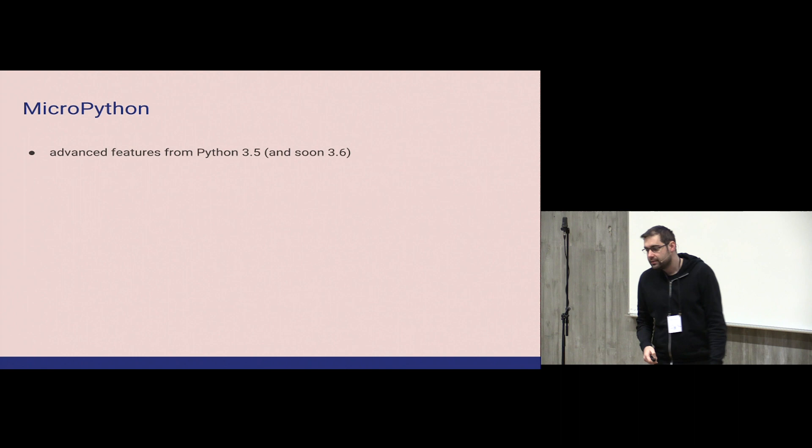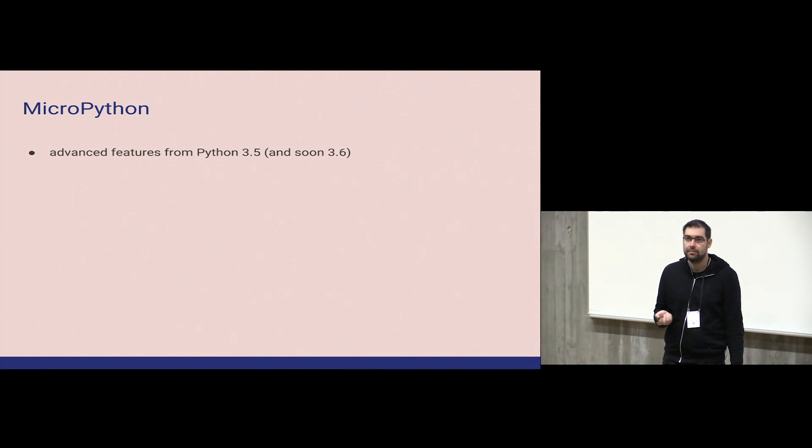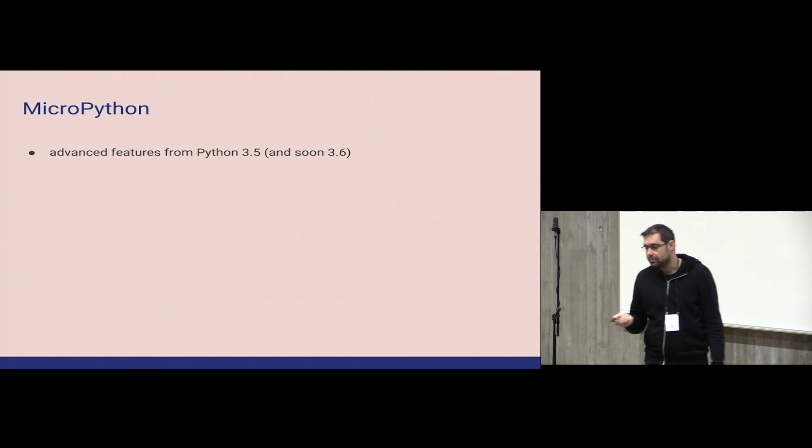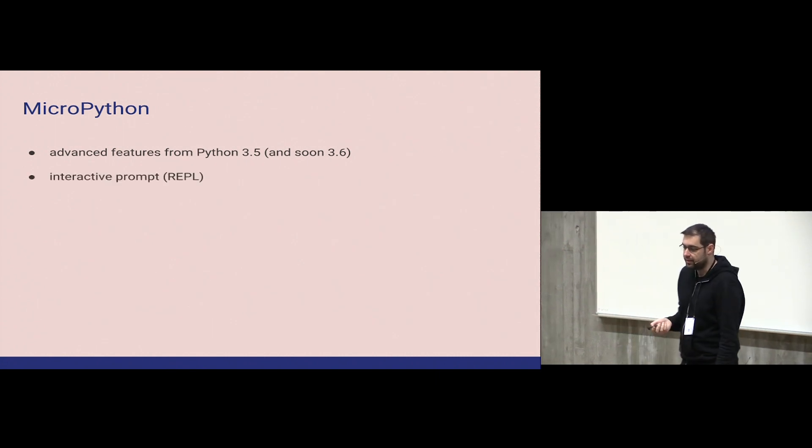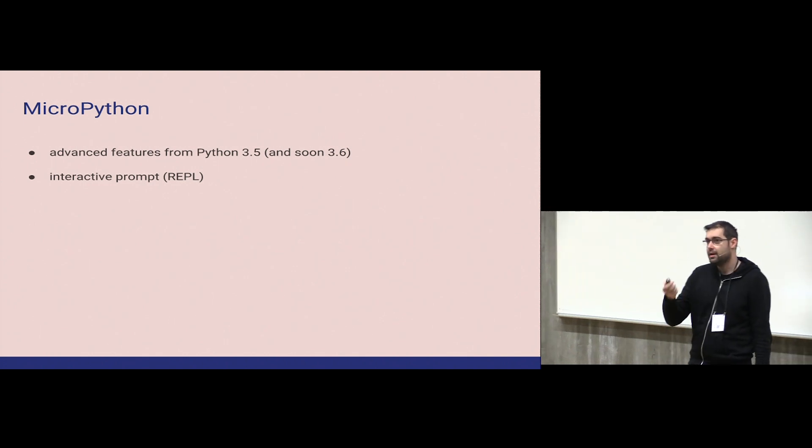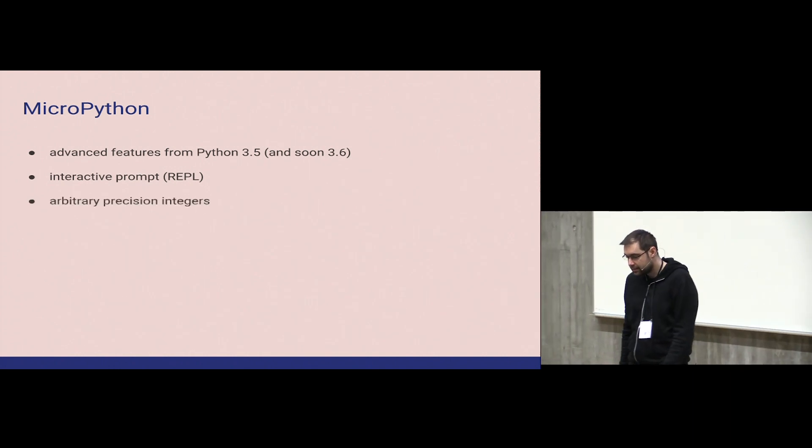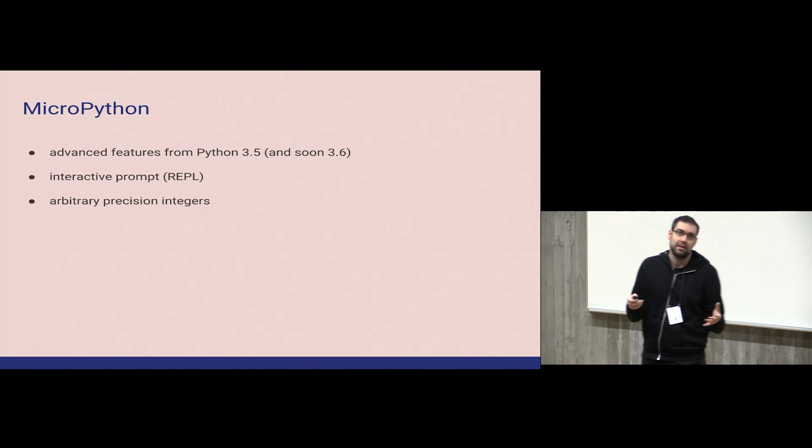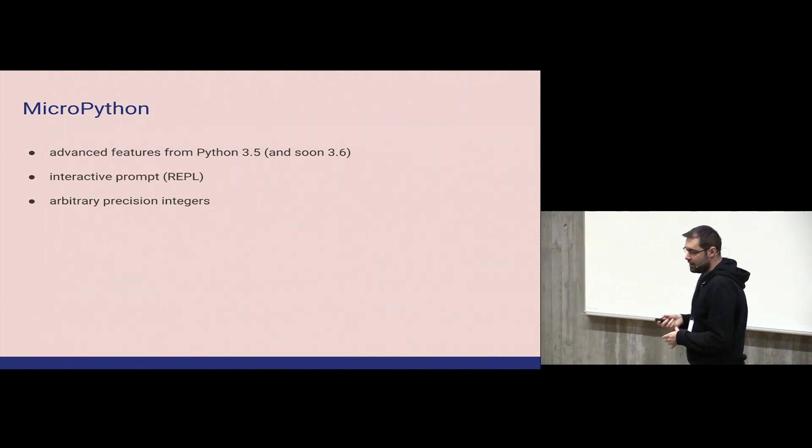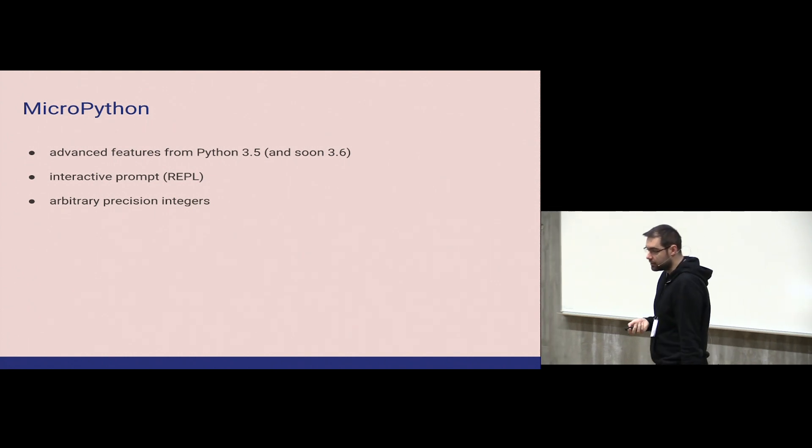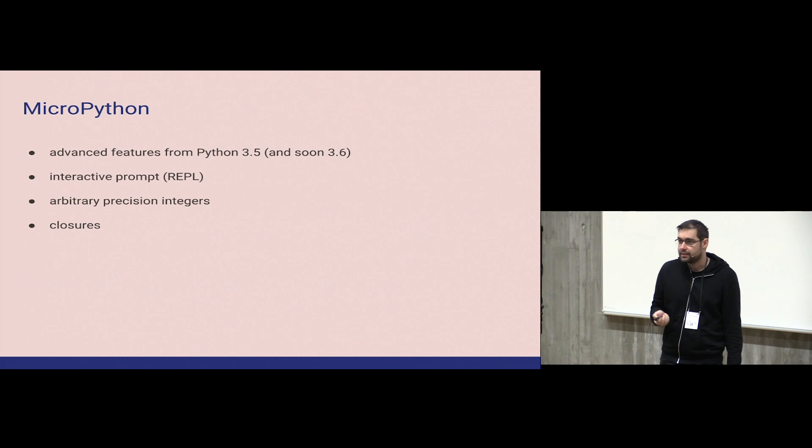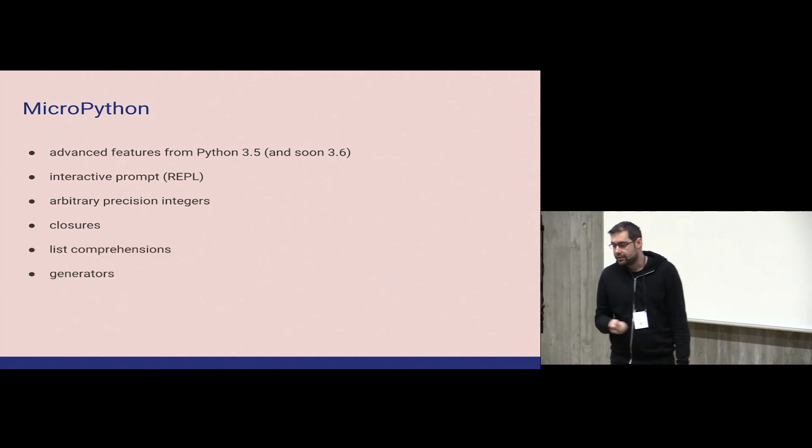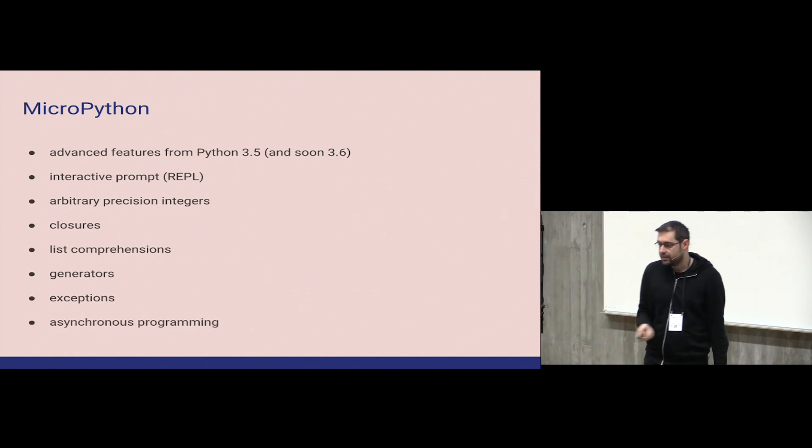Also MicroPython is very advanced. It has bleeding edge features from Python 3.5 and soon to be released Python 3.6. Some of them are interactive prompts, REPL, that you can interactively type into MicroPython to immediately see the results. It has arbitrary precision integers, which is pretty common when you are used to scripting languages on desktop, but it's quite unusual to have it on microcontrollers. Also it has closures, list comprehensions, generators, exceptions, and also asynchronous programming. So basically all advanced features from Python 3.